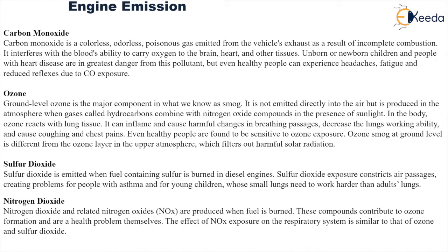Then another component is ozone. We know that ozone is a good component — it will prevent the harmful ultraviolet radiations of the sun from reaching the surface of the earth. However, this ozone is only useful to prevent UV radiation from coming to earth when it is in the upper atmosphere forming a cover blanket over the earth. But at ground level it is a major component in what we call as smog — the combination of smoke and fog. It is not directly emitted into air but is produced in the atmosphere when a combination of oxides of nitrogen and hydrocarbon reacts in the presence of sunlight.